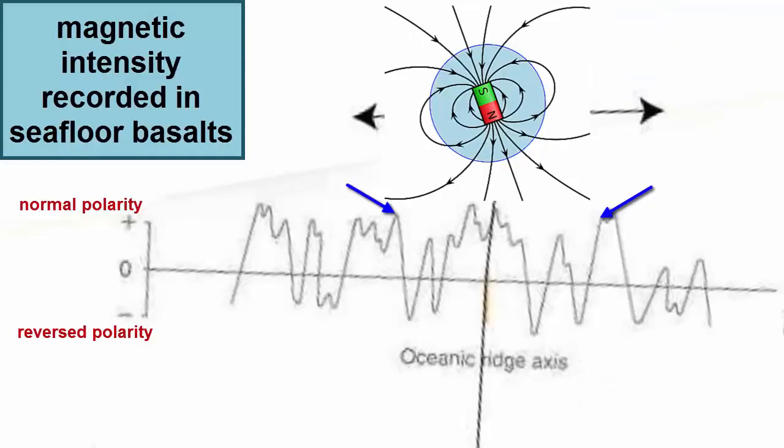As these graphs of intensity show, the strength of the magnetic field decreases and then hits zero before either starting up again and increasing in the same direction as before, or increasing but in the opposite direction.